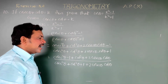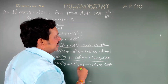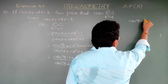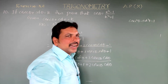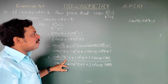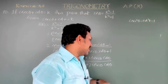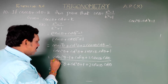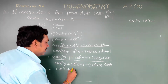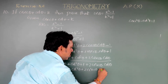By trigonometric identity 3: cosecant square theta minus cot square theta equals 1, therefore cosecant square theta minus 1 equals cot square theta. So in place of (cosecant square theta minus 1) in the numerator, write cot square theta. The numerator becomes cot square theta plus cot square theta plus 2 cosecant theta cot theta.